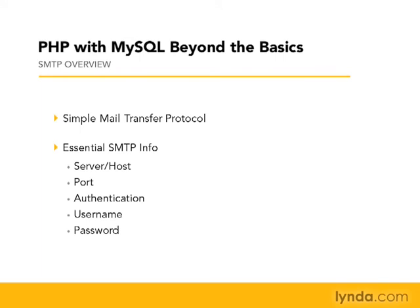Or maybe it's called mail dot the domain name, or outgoing dot the domain name. The port will typically be 25 for sending. But it's always possible that your ISP has put it on a different port, so if 25 doesn't work, you can always ask them. Authentication username and password is how you log into that server to send email — you can check with your ISP for all of these values.